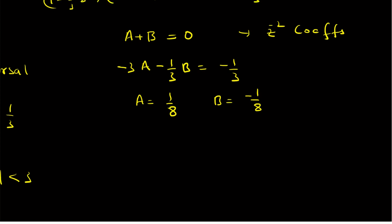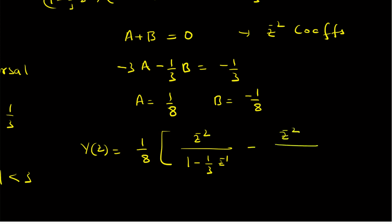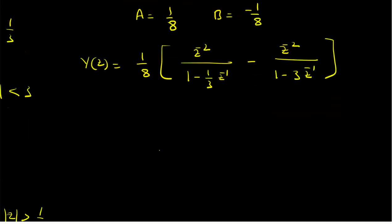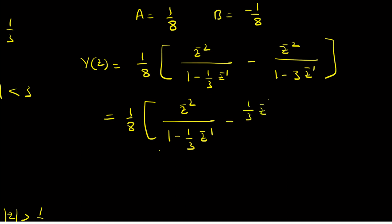Therefore the partial fraction expansion of Y of Z is 1 by 8 times Z power minus 2 over (1 minus 1 by 3 Z inverse) minus 1 by 8 times Z power minus 2 over (1 minus 3 Z inverse). To find the inverse Z transforms we consider the ROCs: the first component has a causal inverse transform since ROC is outside a circle of radius 1 by 3, while the second must be anti-causal since the ROC is inside a circle of radius 3.